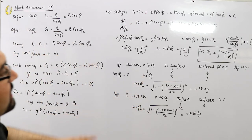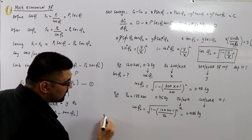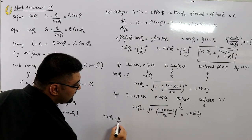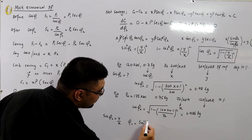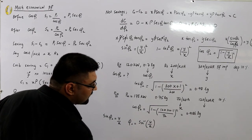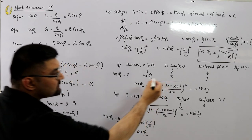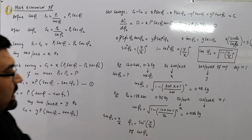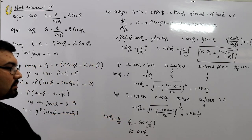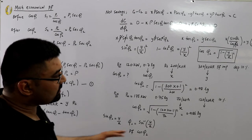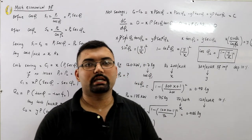To summarize: when you reach the step sin(φ2) = Y/X, you can find φ2 = sin⁻¹(Y/X) and then take cos(φ2) for the most economical power factor. Y is the cost per kVAr of improvement equipment and X is the cost per kVA of maximum demand. I will finish this video here and cover one or two more examples in the next video. Take care, goodbye.